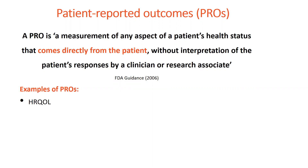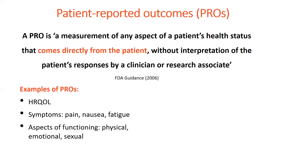Health-related quality of life is one example of a multidimensional patient-reported outcome. Other examples include individual symptoms such as pain, nausea, and fatigue; aspects of functioning such as physical, emotional, and sexual functioning; and process of care variables such as satisfaction with care received or satisfaction with the information provided by healthcare professionals while undergoing treatment.